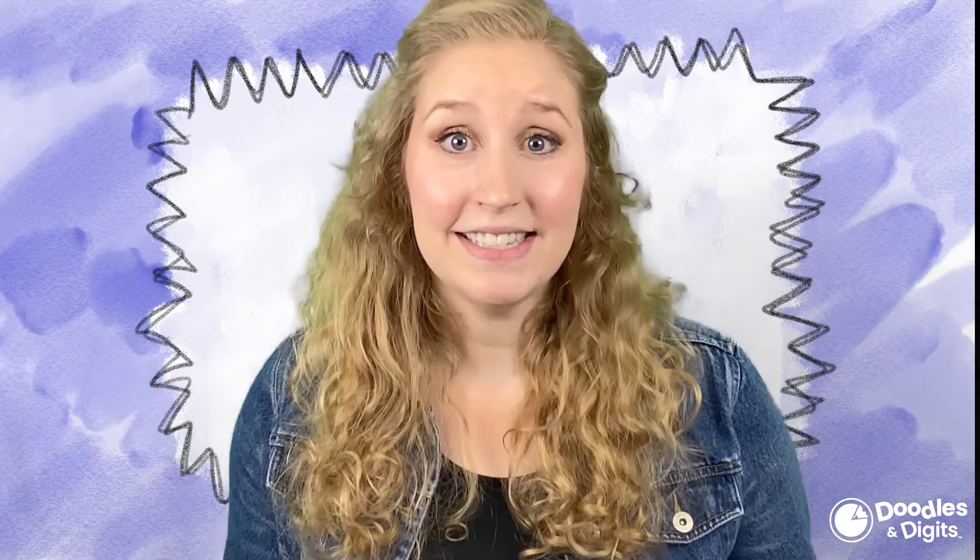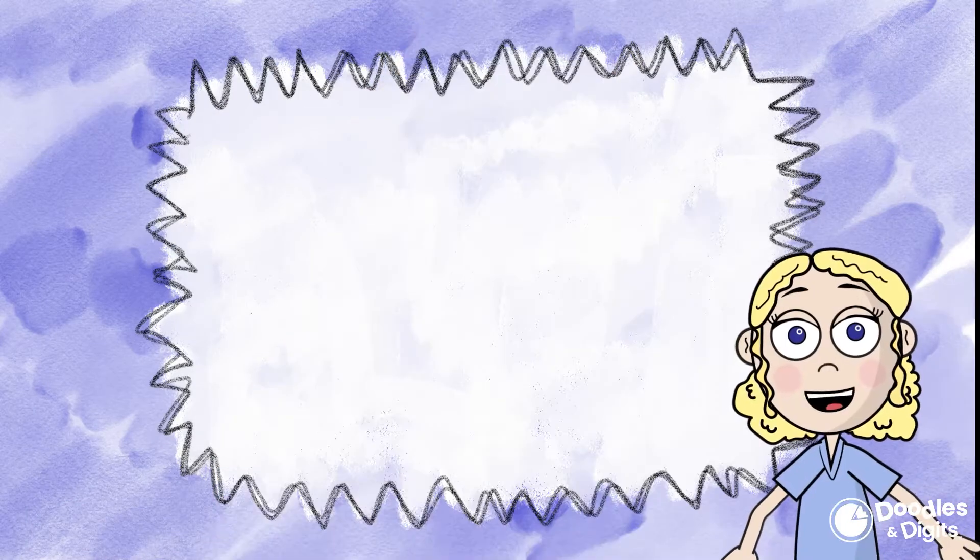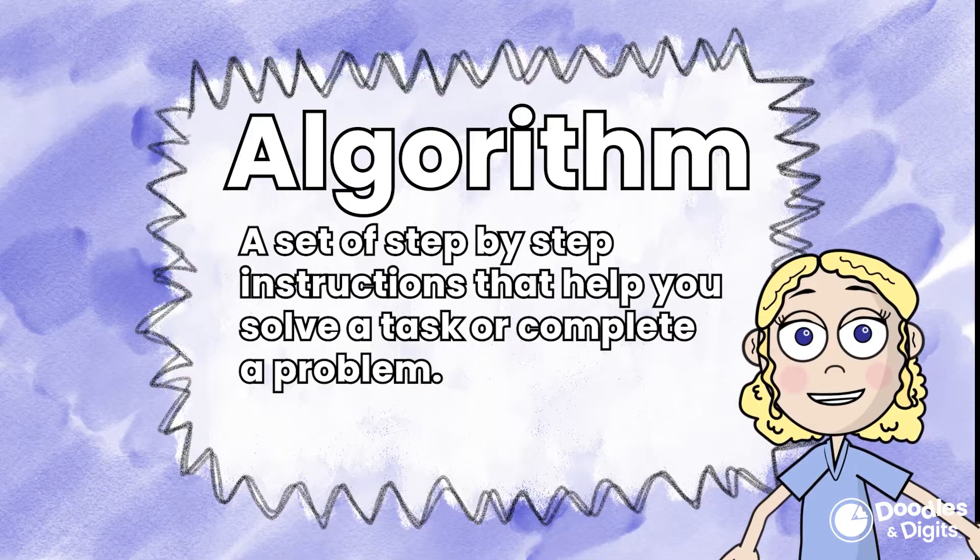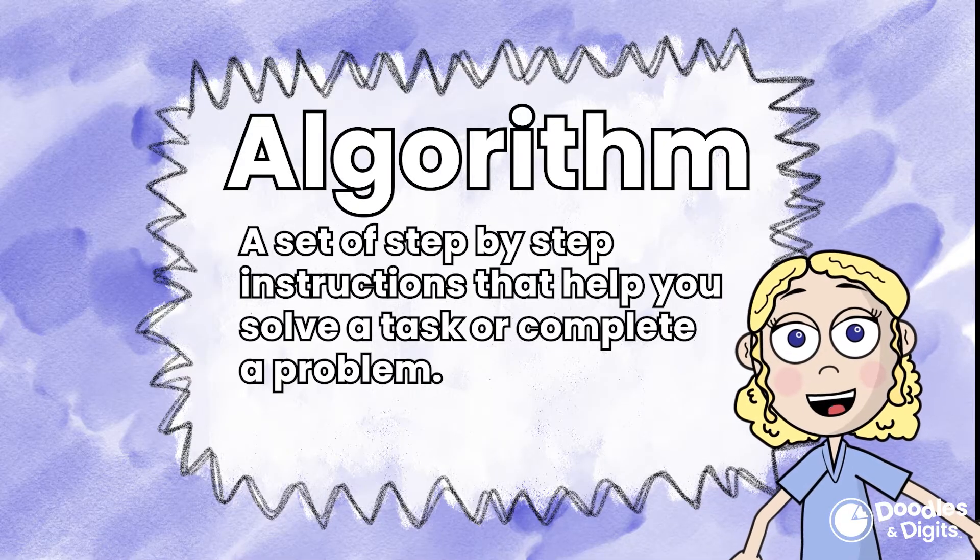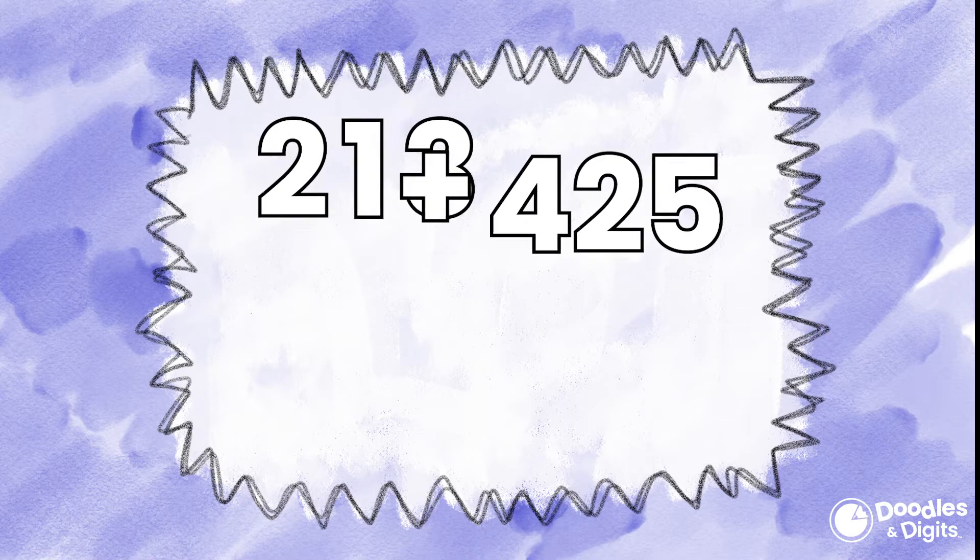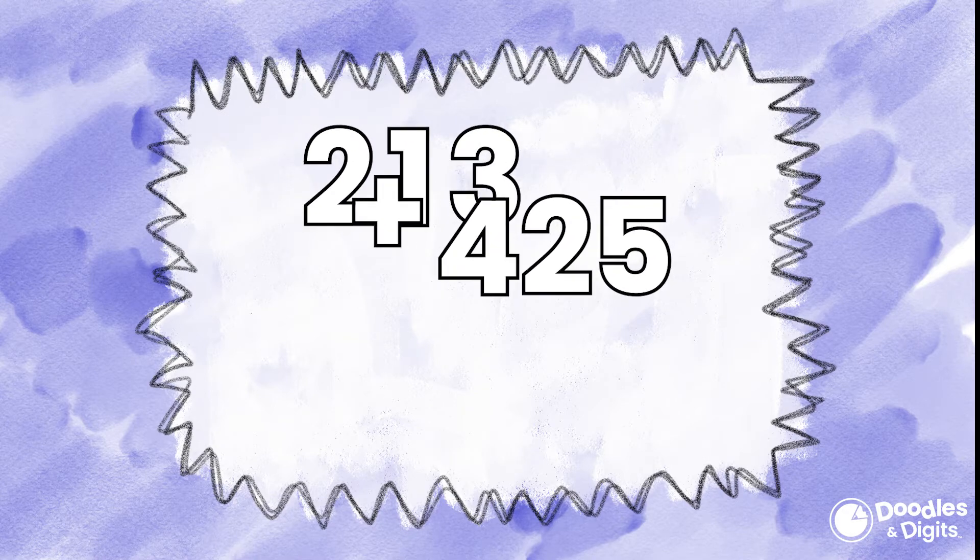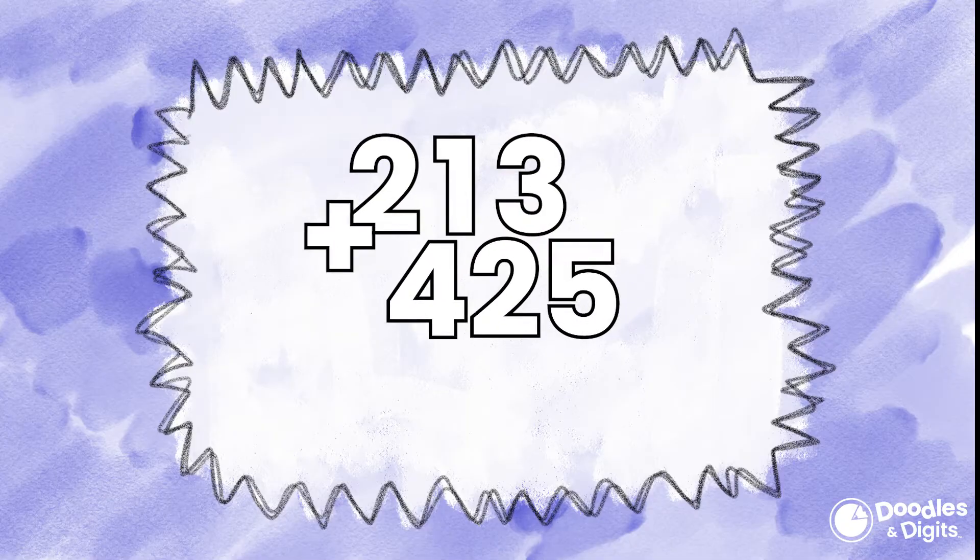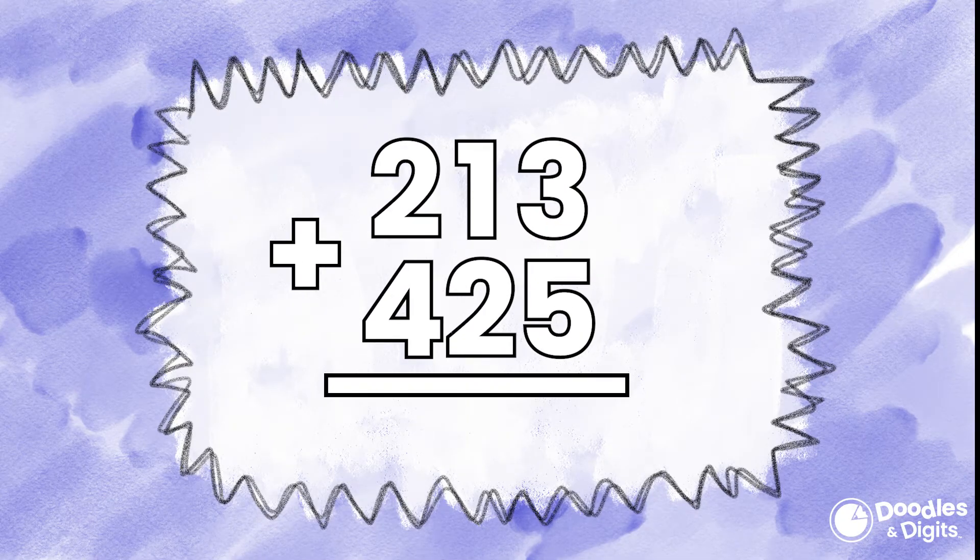Alright, so what is the standard algorithm? An algorithm is a set of step-by-step instructions that help you solve a task or complete a problem. Let's try this problem here. 213 plus 425. The standard algorithm, you're going to line the two numbers on top of one another and add by place value.